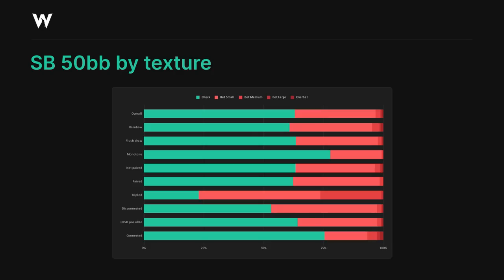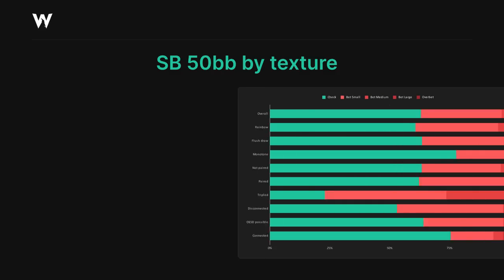There are a few clear trends here. The triple boards are the best ones for the small blind, with the connected and monotone ones being the worst. It doesn't seem to matter much whether the board is paired or unpaired, or whether it's rainbow or contains a flush draw. Other factors matter more, as we'll see in a moment.